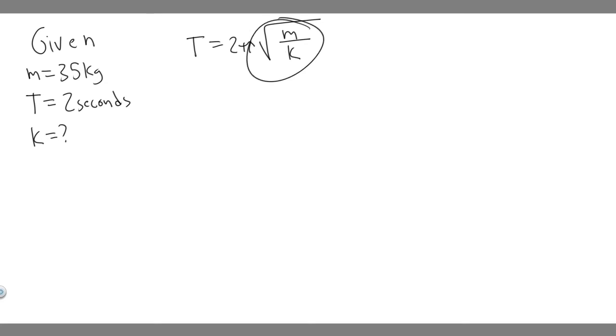Just divide both sides by 2π. This side will cancel. So t over 2π equals the square root of m over k. We can square both sides to get rid of the square root. So it's going to become t squared over 4π squared equals m over k.